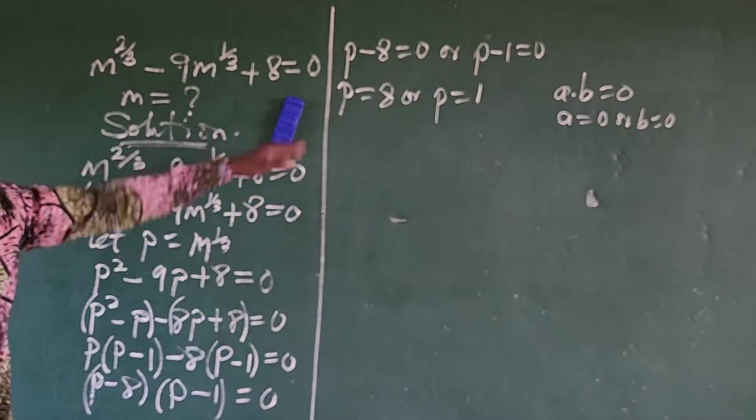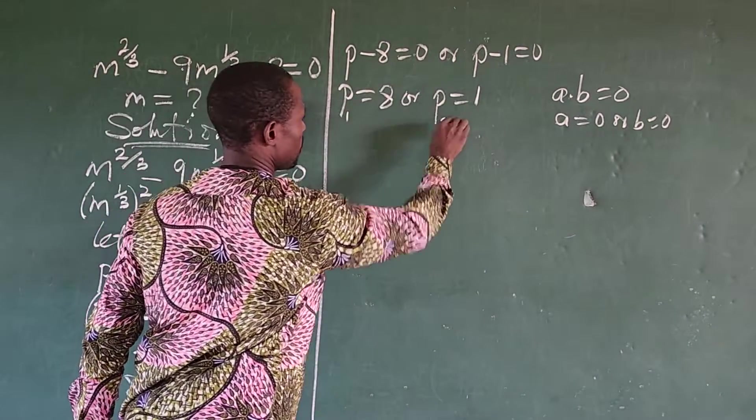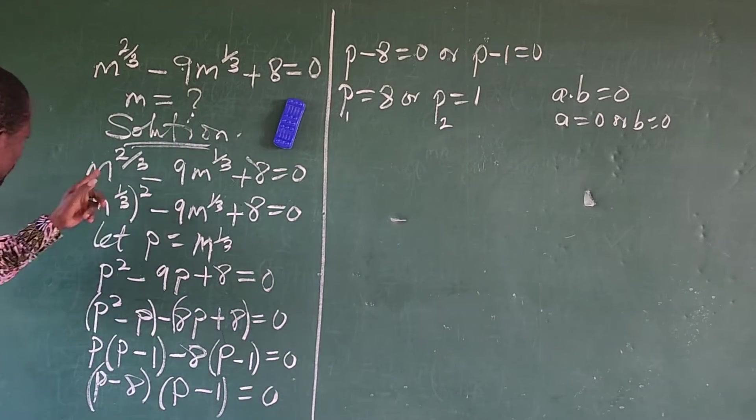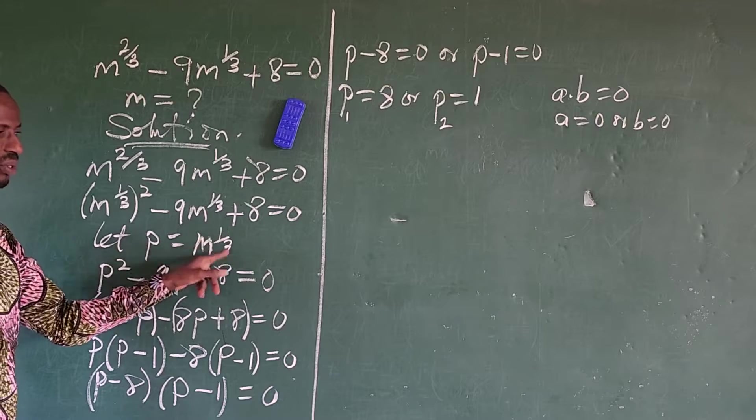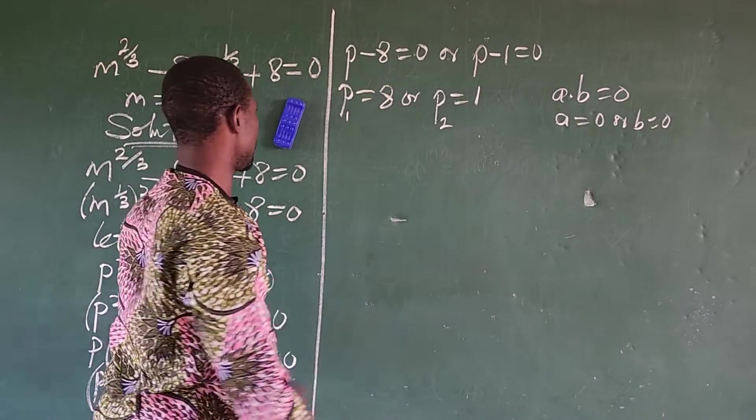So if I apply this rule to this, this will now give us here p minus 8 equals 0 or p minus 1 equals 0. Let's see, p is equal to 8 or p is equal to 1. So we have this to be our p1 and this p2.